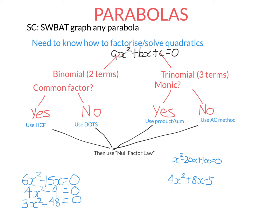When you want to factorise a quadratic, you do it differently if there are two terms — a quadratic binomial — than if there are three terms — a trinomial. So if the quadratic has two terms, ask yourself: is there a common factor? If there is, use the highest common factor. If there's not a common factor, then you use difference of two squares.